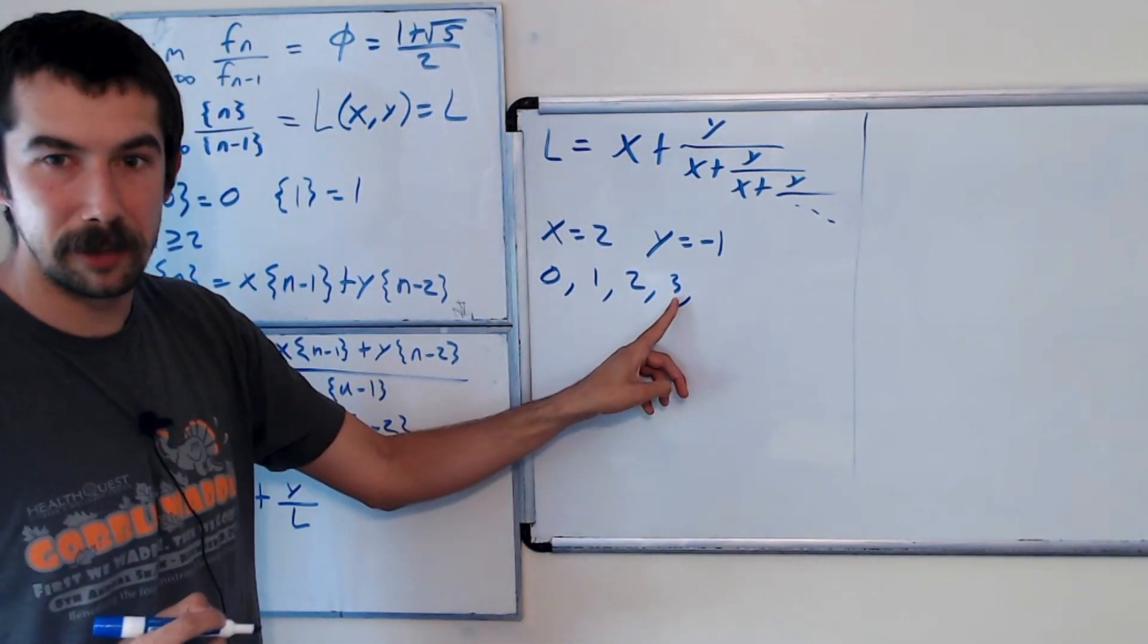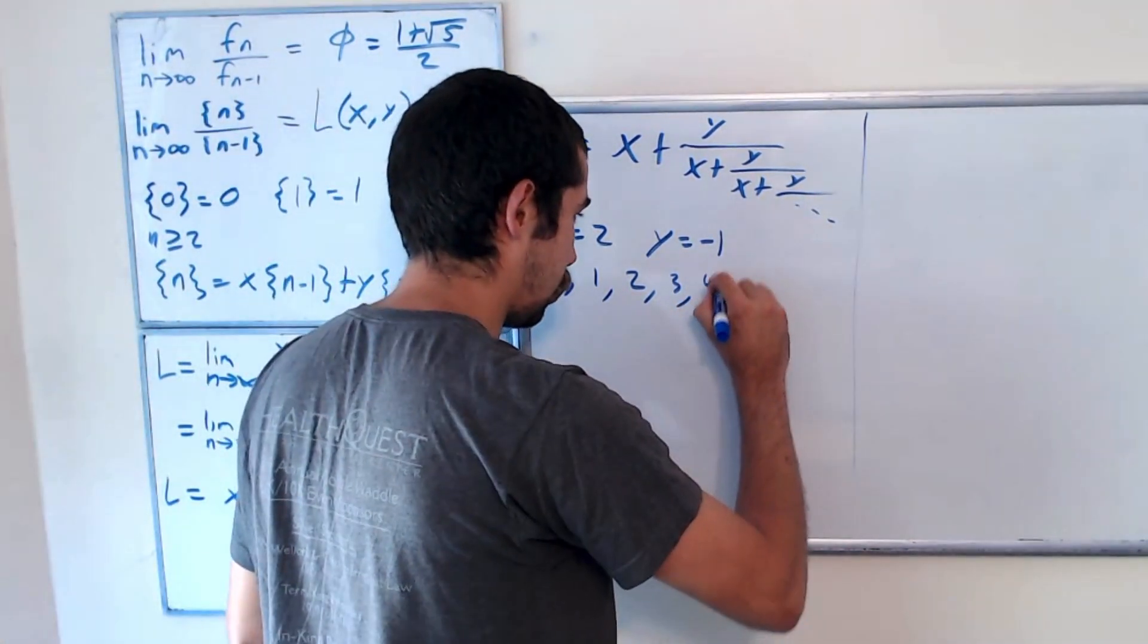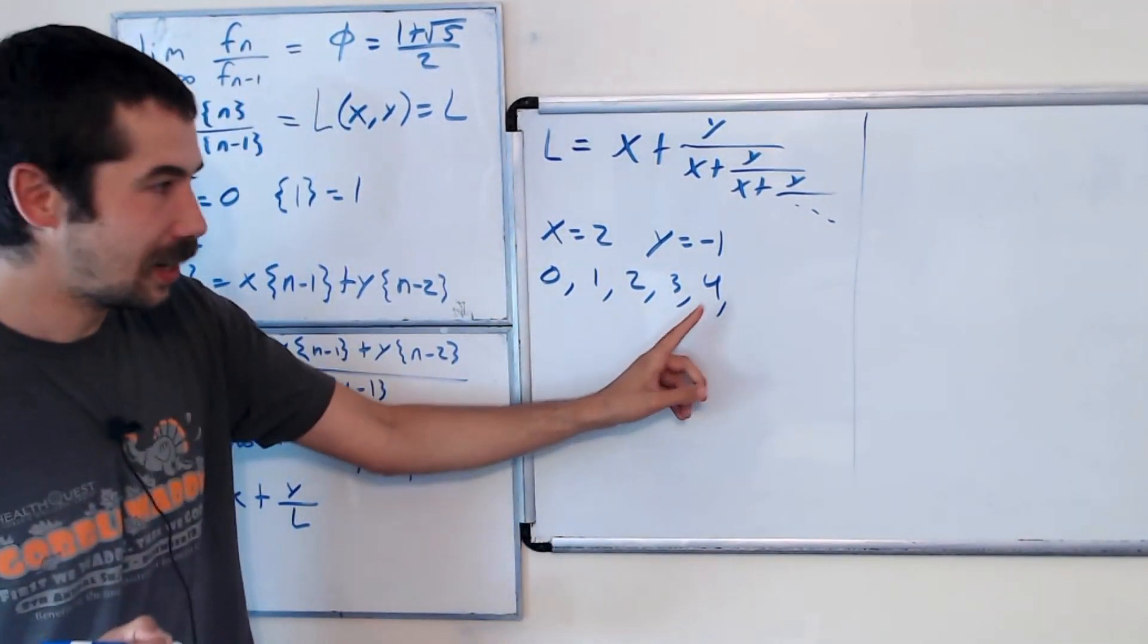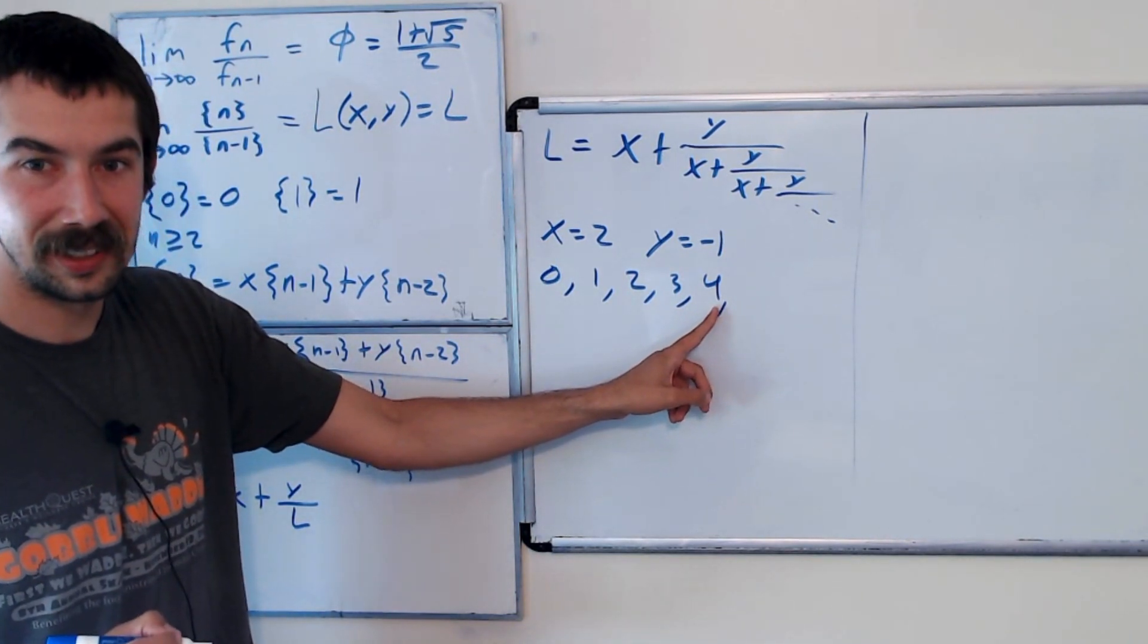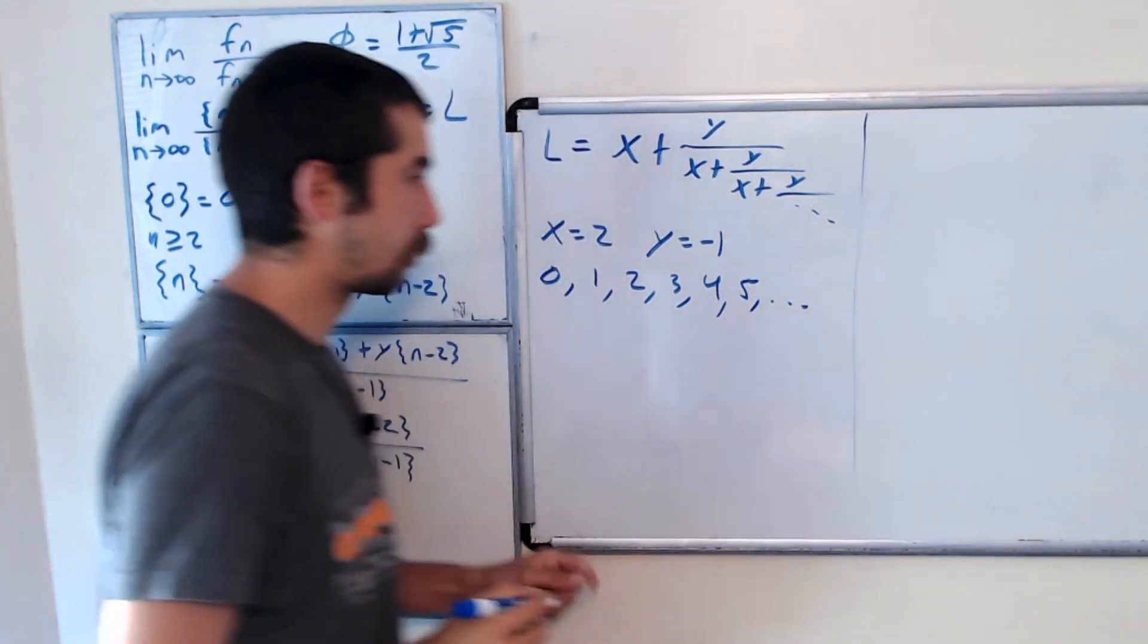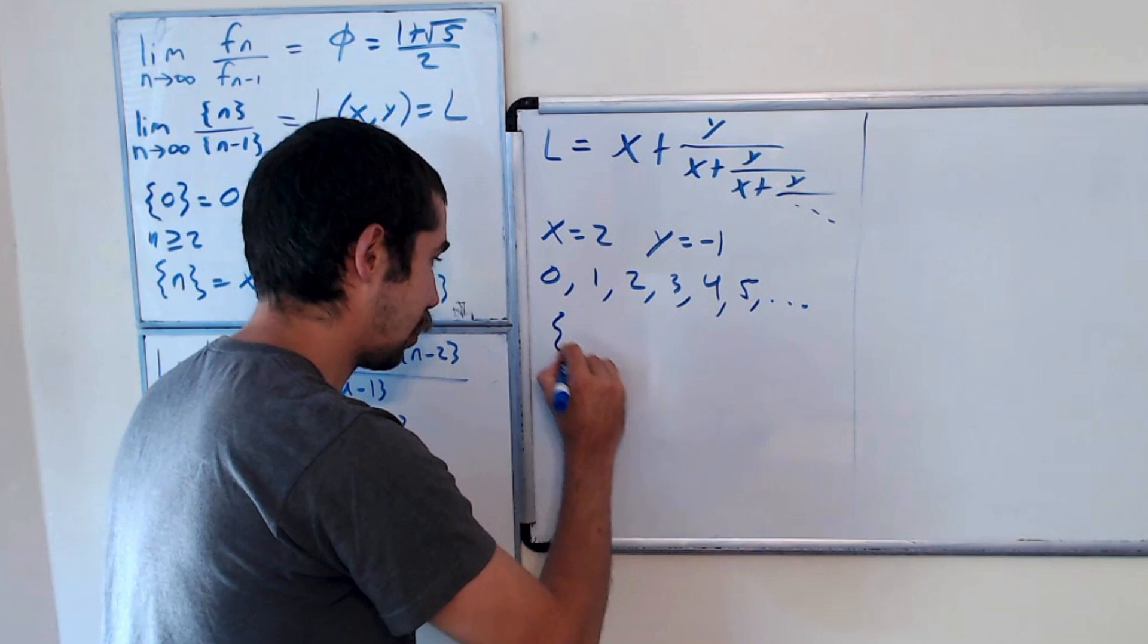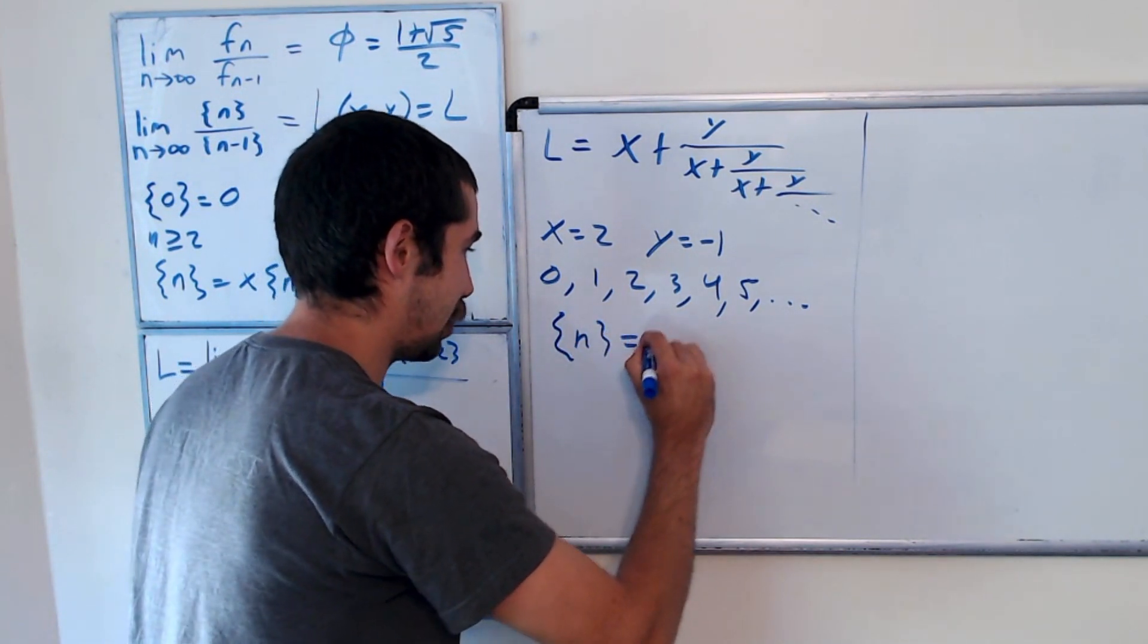What's the next term? 2 times 3, which is 6, minus 2, gives us 4. Maybe you see the pattern. 2 times 4, which is 8, minus 3 is 5. When you plug in x equals 2 and y equals negative 1, bracket n is just equal to n.